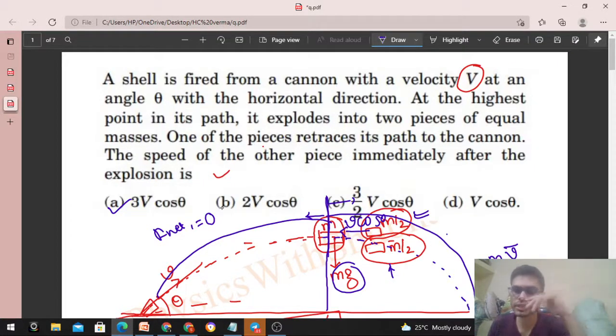By the way, after the explosion—I mean when it breaks into two parts—just before it breaks into two parts and just after it breaks into two parts, you can conserve the momentum in vertical direction also. And the reason is that MG force is a non-impulsive force.